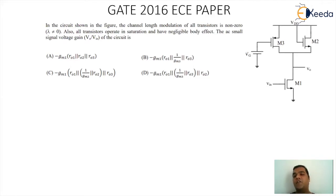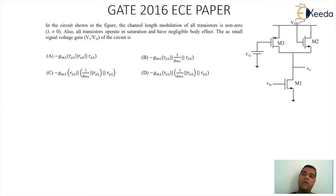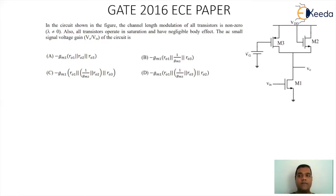Observing the circuit carefully, we have three MOSFETs — M1, M2, and M3 — where input is given to the gate of M1 and output is taken from the drain. In the AC equivalent, the VDD node becomes ground. The gate of MOSFET 3 also gets shorted to ground since it connects to a DC supply. So MOSFET 2 and MOSFET 3 are effectively acting as load for MOSFET 1.